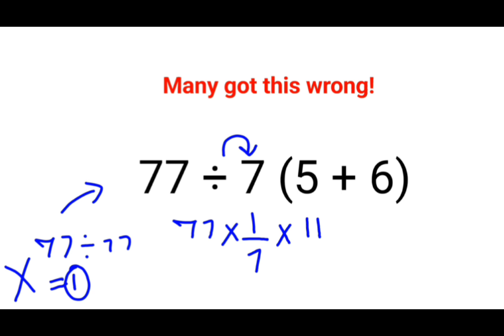According to BODMAS, you need to solve the bracket first. That's agreed. So this is 11. But here the sign between the number and the bracket is nothing but multiplication. And since there is a division sign involved over here, which can be converted into multiplication, but once you do that, this 7 goes into the reciprocal.